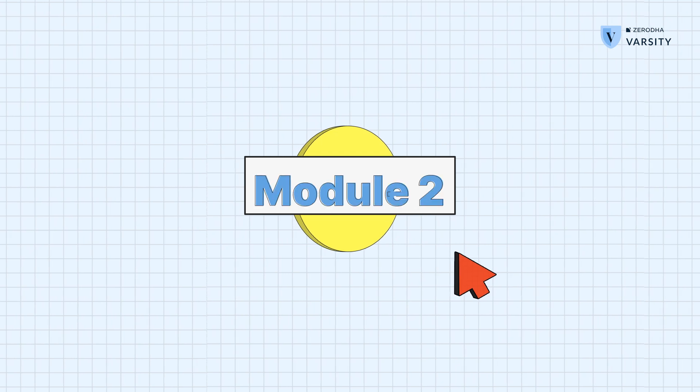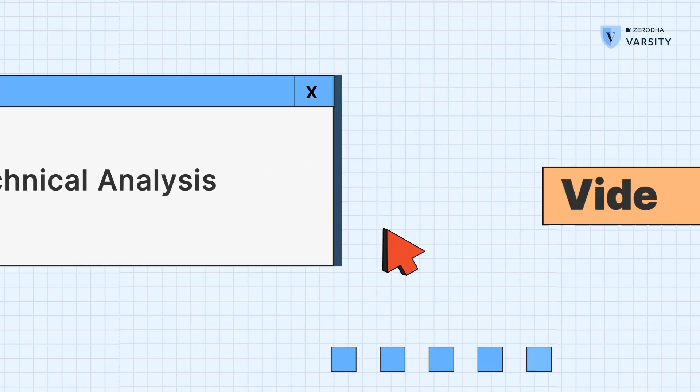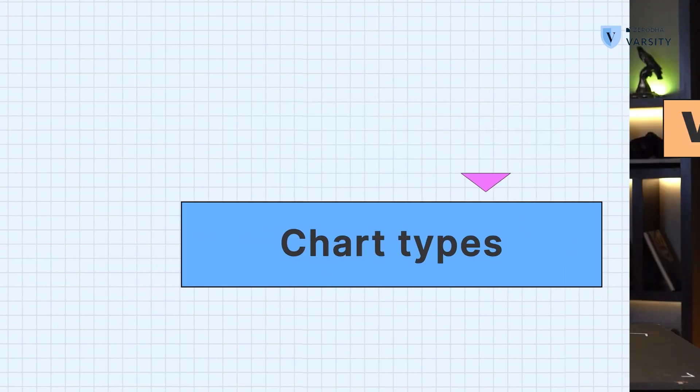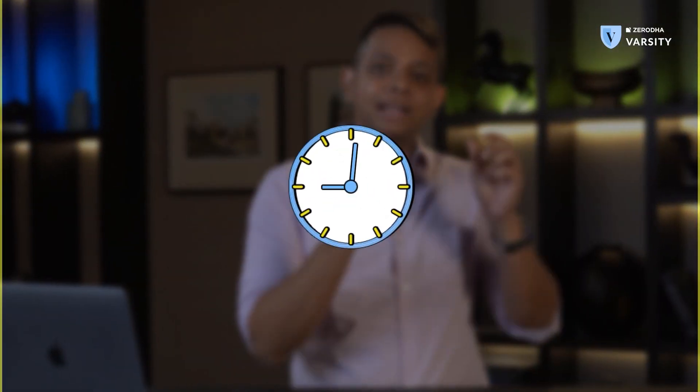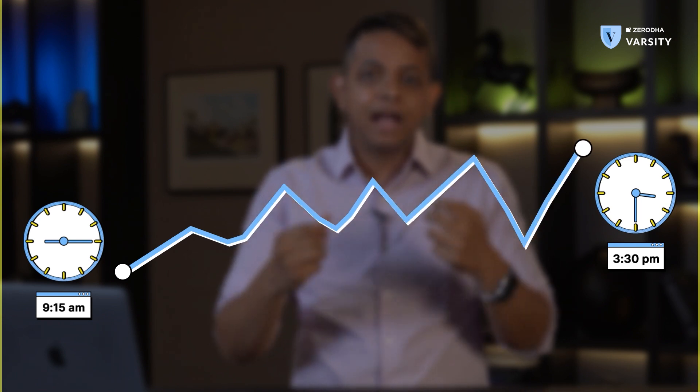Hi guys, I'm Prateek Singh, and in this video we're going to learn about chart types and how charting works. Markets open at 9:15 a.m. and close at 3:30, and there are so many trades happening every day, so much price movement. How do you visually plot price movement over a long period of time?